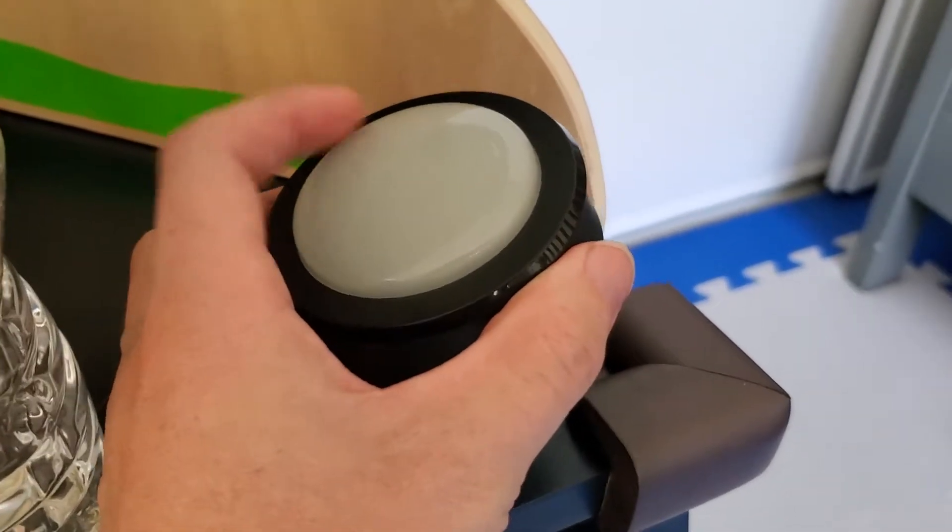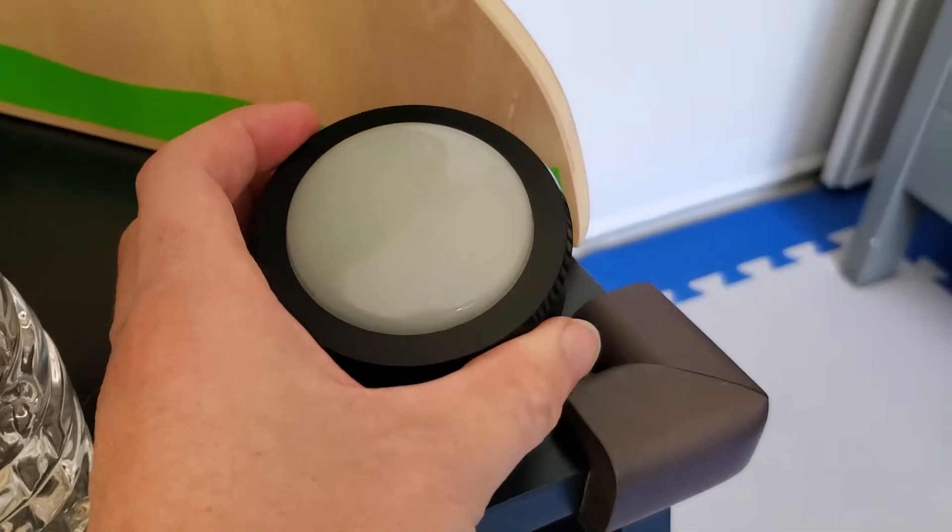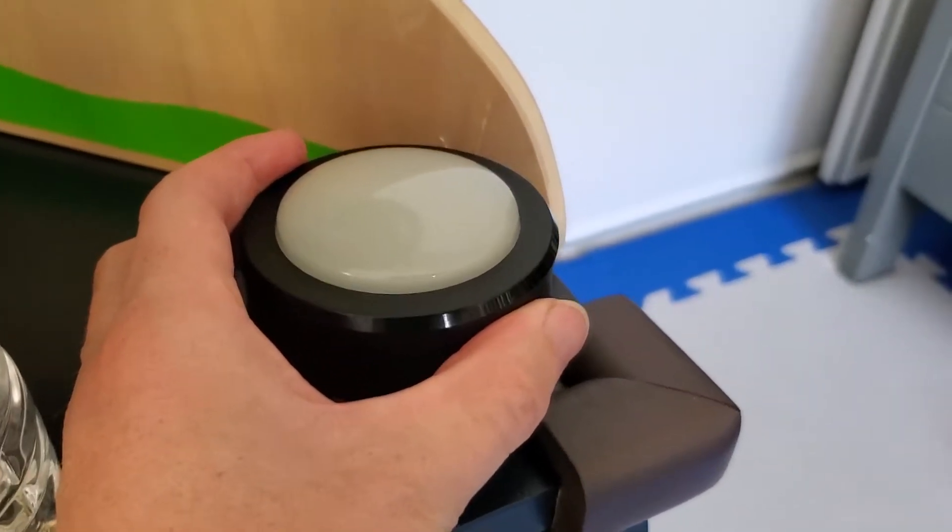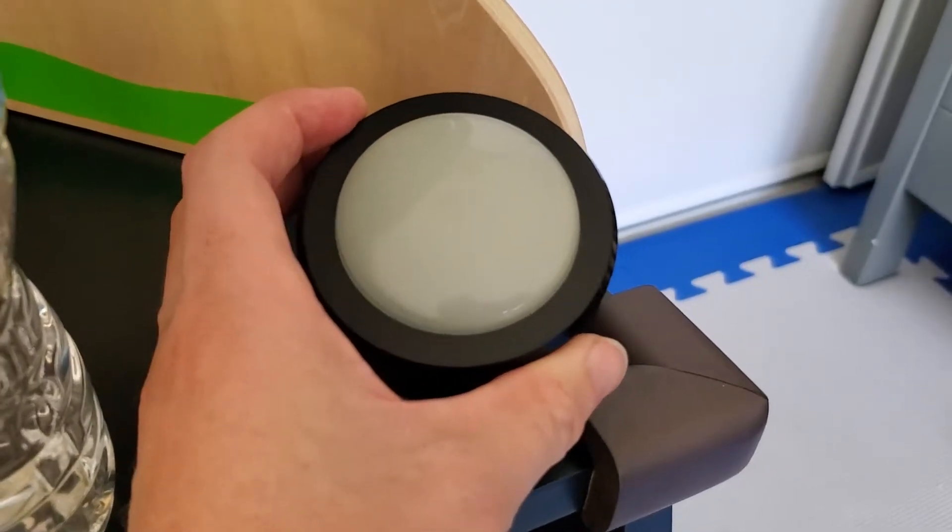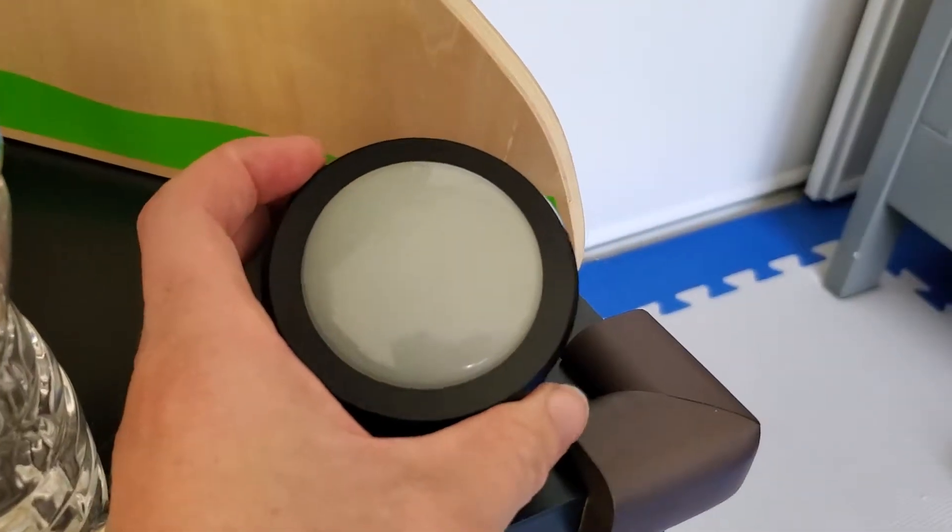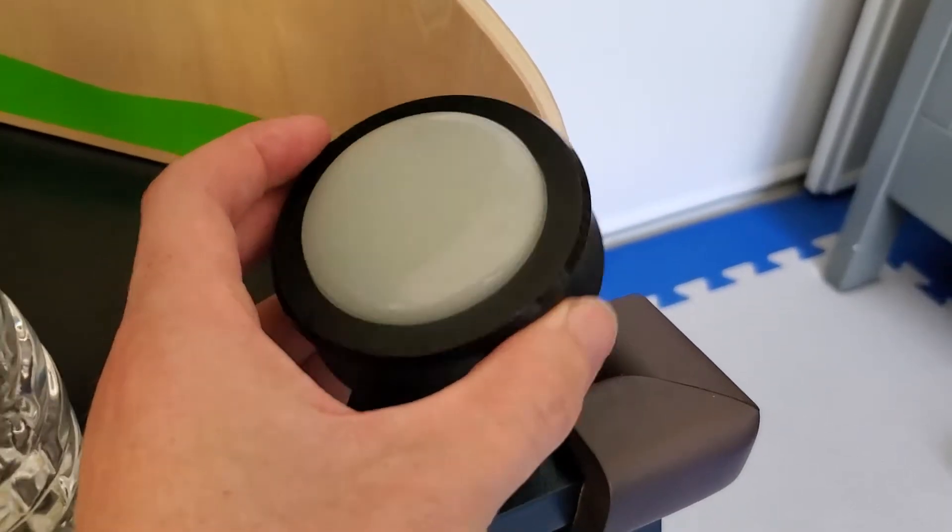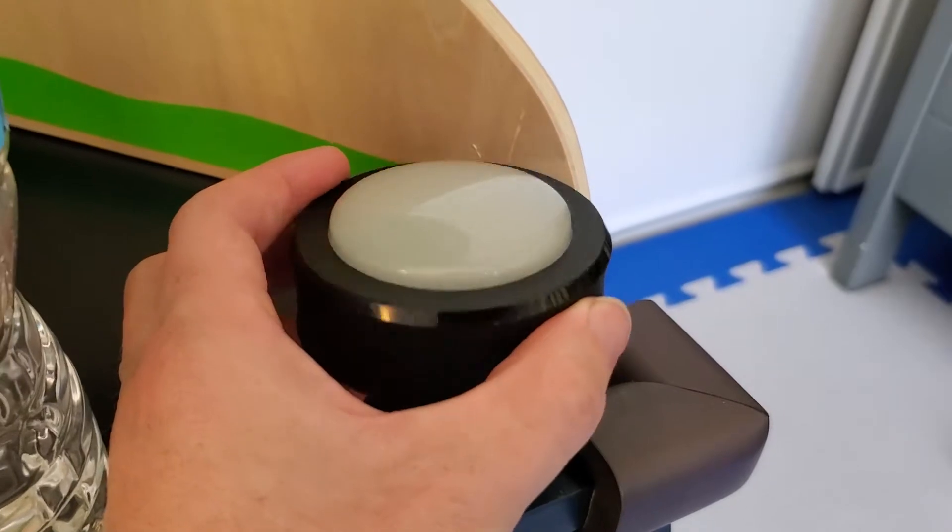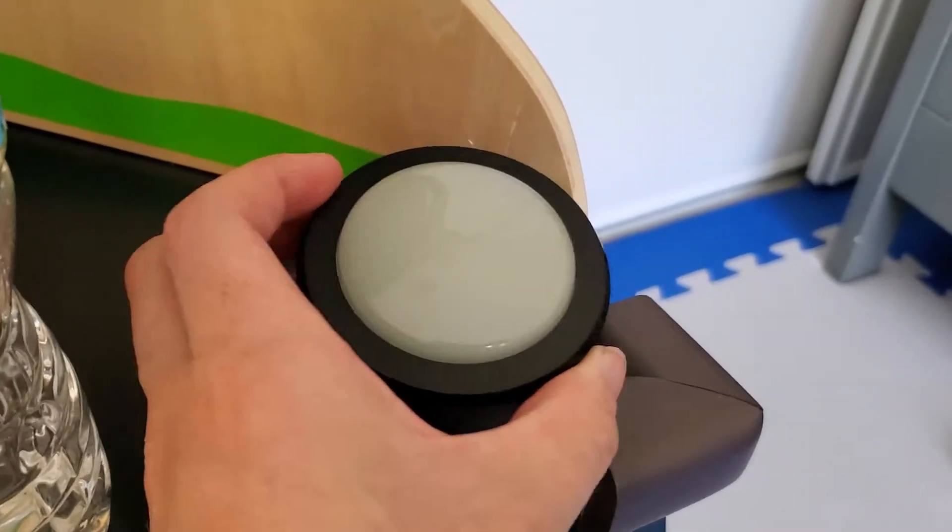And once it's set up, you can program this to do any routine that you can set up in the Alexa app. So you can program this to turn lights on and off, to tell your Nest thermostat that you're away from the house. Anything that you would set up as a home automation routine in the Alexa app, you can then control using these buttons.